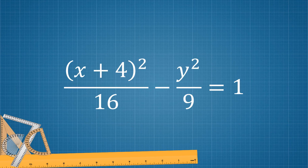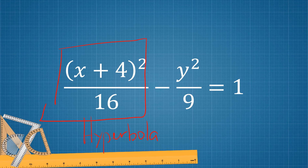Let's try another example: (x plus 4) squared over 16 minus y squared over 9 equals 1. Since there are fractions involved, we're going to choose between an ellipse or hyperbola. However, since the two terms are separated by a minus sign, that is a hyperbola. Since x has a positive sign and it involves x, the orientation is horizontal.